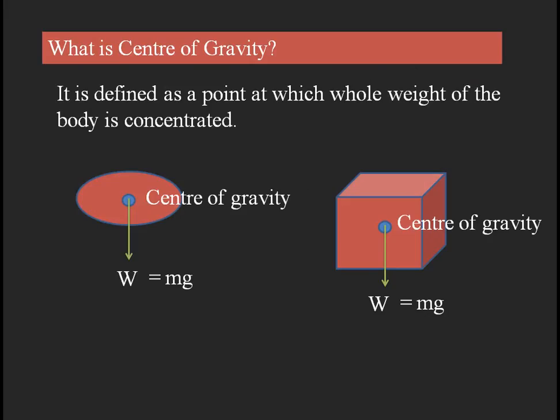Center of gravity is defined as a point at which the whole weight of the body is concentrated. Whenever you take any particular solid body, it has a certain weight according to its mass and gravitational acceleration. At the point where the total weight W = mg is concentrated, that point is called the center of gravity.